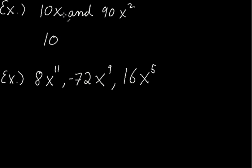What about x and x squared? Well, x is a factor of x squared, because x squared is x times x. So x would be it. So actually, the greatest common factor between 10x and 90x squared is 10x.